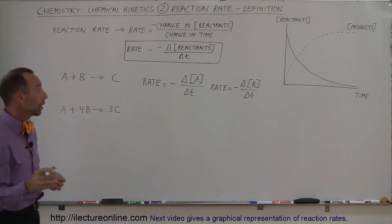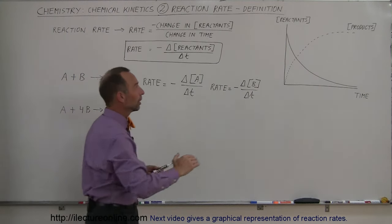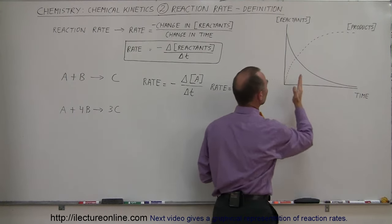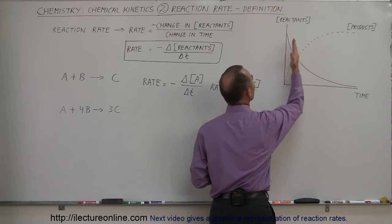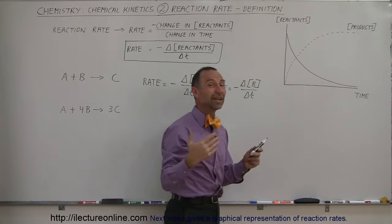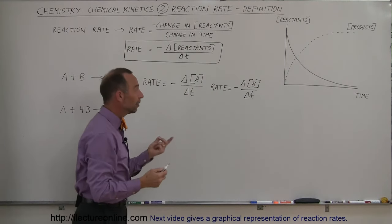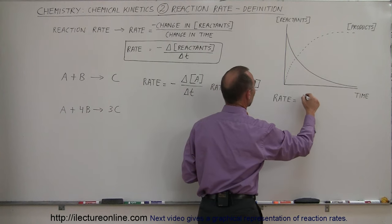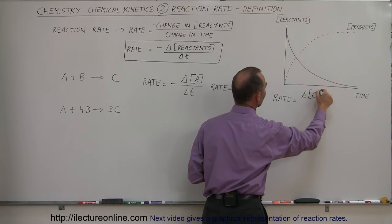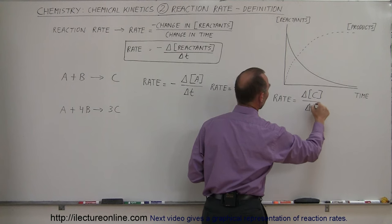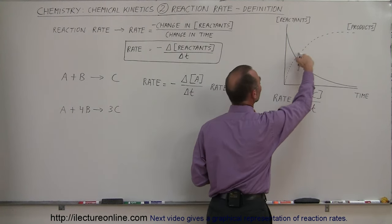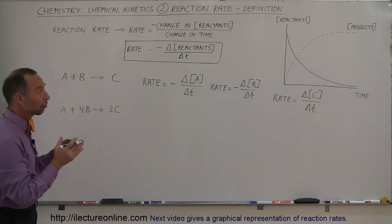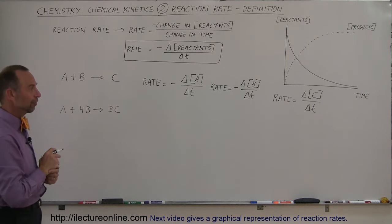You can also express the rate in terms of the products being produced. This dashed line represents the concentration of the products. Notice that the positive slope here is equal in magnitude to the negative slope of the reactants — they differ only by a sign. So the rate can also be expressed as the positive change in the concentration of C divided by the change in time. No negative sign is needed because the slope is already positive, and numerically the slopes are the same.